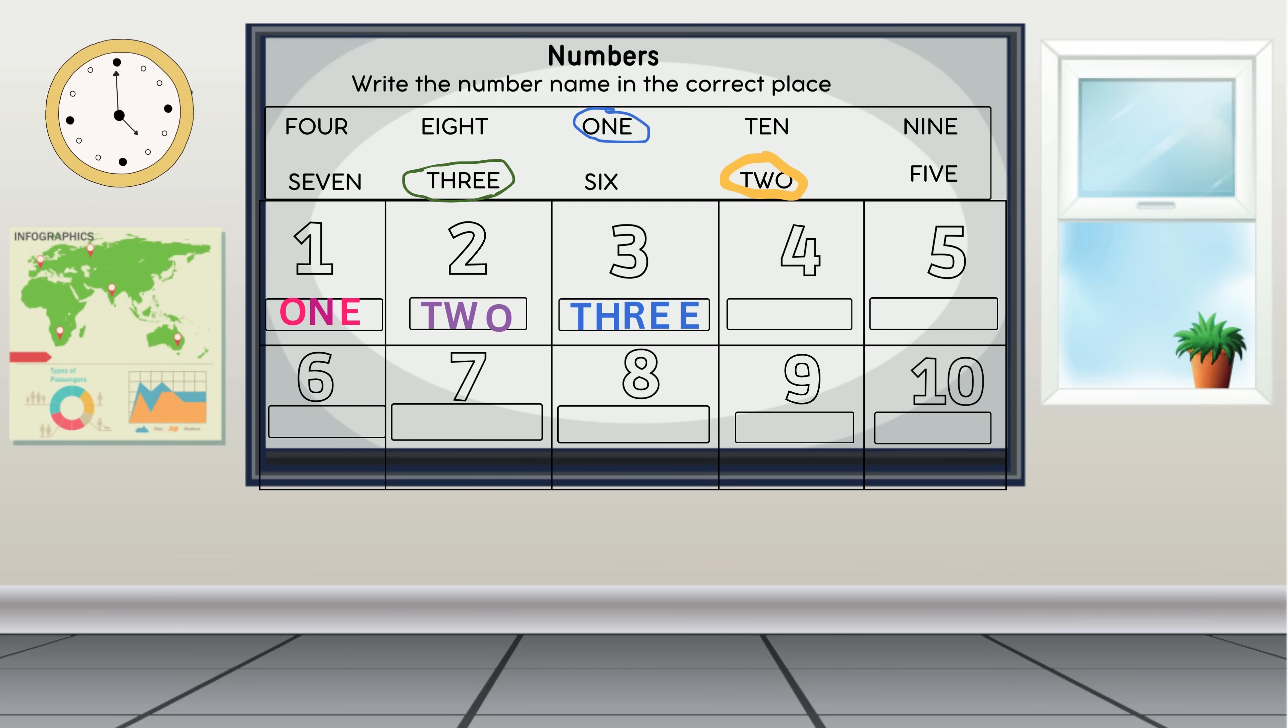Where is four in the word bank? There it is. Now let's circle four. Great job, let's write and spell four: F-O-U-R. Let's spell four again: F-O-U-R.